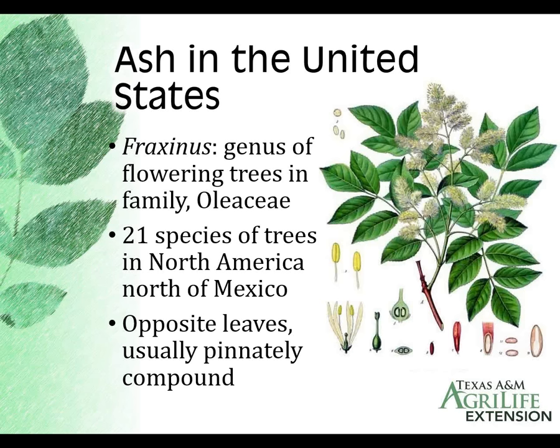Many of you are plant persons and probably know much more about different trees than I do, but just a little background about the ash tree we're going to be talking about. Ash is a tree in the genus Fraxinus, a genus of flowering trees in the Oleaceae family. We have 21 different kinds of ash trees in North America. These are opposite — one of the few trees with opposite branching. The leaves are pinnate and usually pinnately compound, sometimes with serrations on the teeth, sometimes smooth. A very common group of trees.